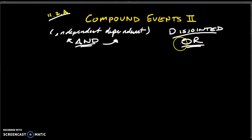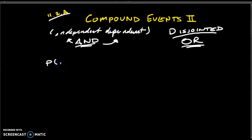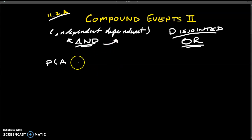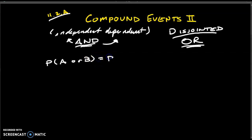So here we go — this is what we're talking about when it comes to disjointed events. This is the formula that we use: the probability of A or B. What we're actually going to do is the probability of A, and then we need to add it to the probability of B.